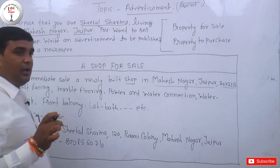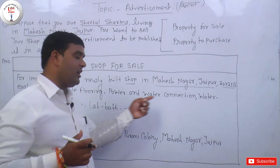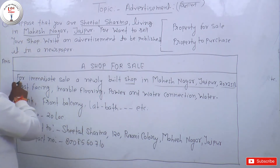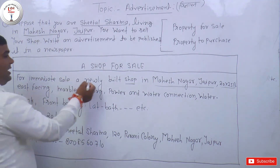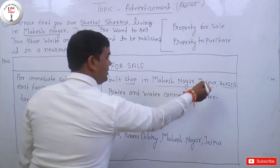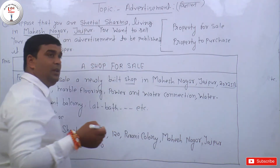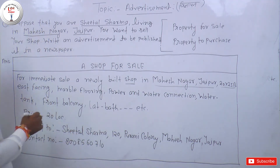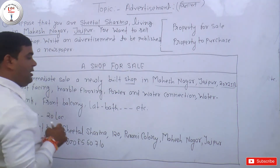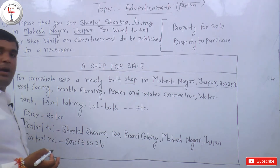Plot number 120 — thodi si jo necessary things hain, yani jo shop se sambandhit necessary facilities hain wo aapko mention karni hoti hain. Jaise: for immediate sale, a newly built shop, address, dukaan ka aakar — 20 by 25 feet, east facing, marble flooring, power and water connection, water tank, front balcony, etc. Aur last price likhein — 20 lakh rupay, 30 lakh rupay, 40 lakh rupay — jo bhi aap likhna chahein.